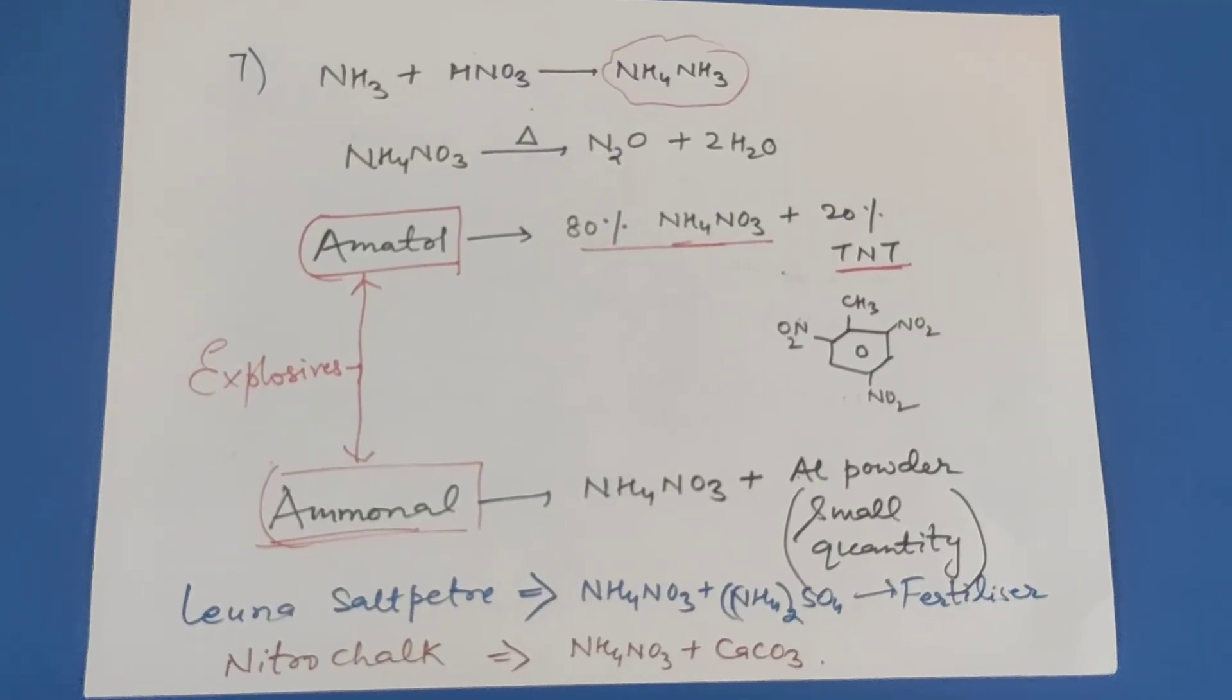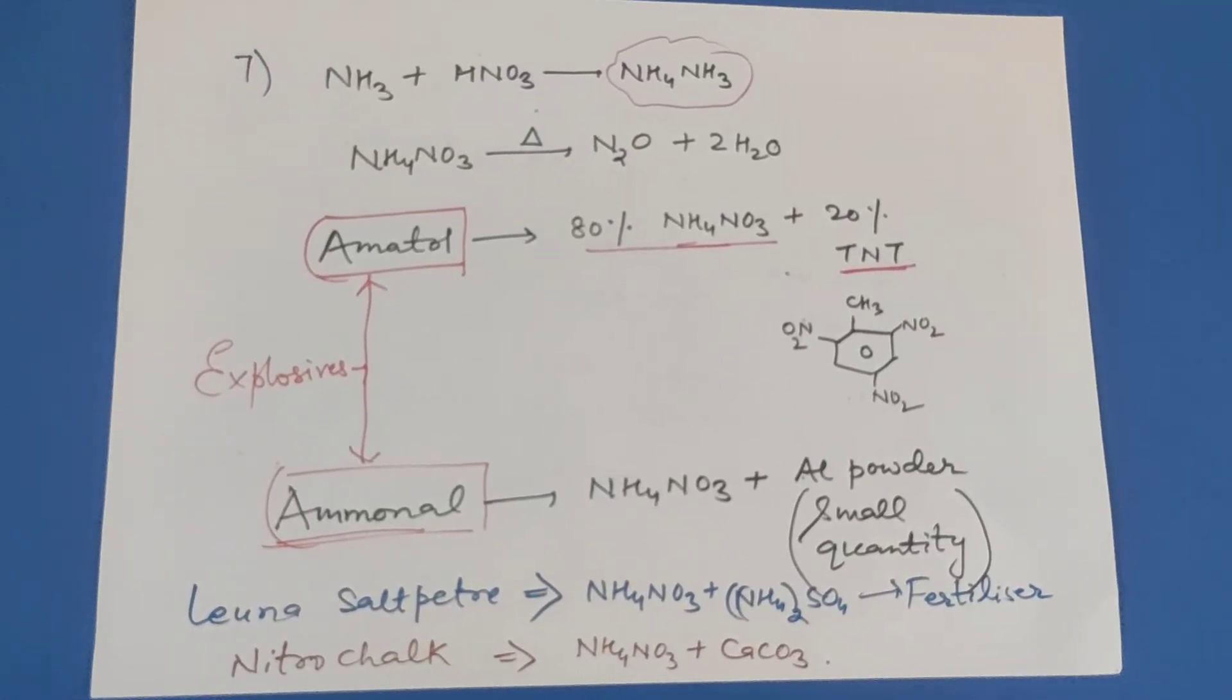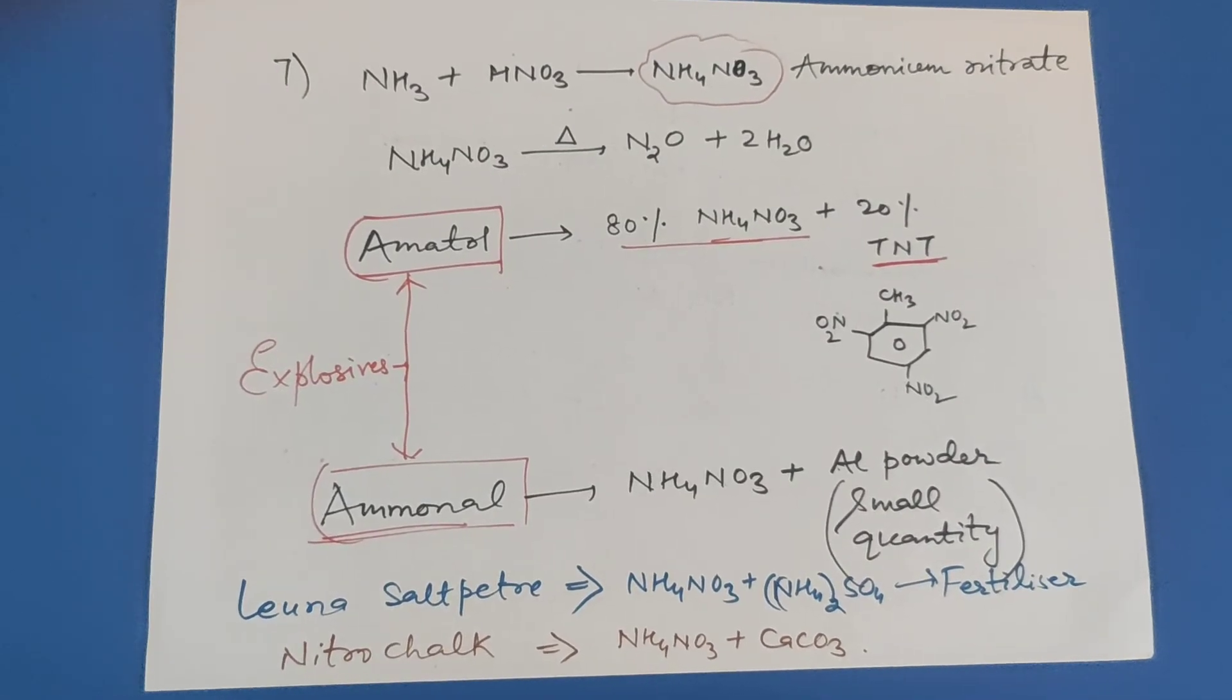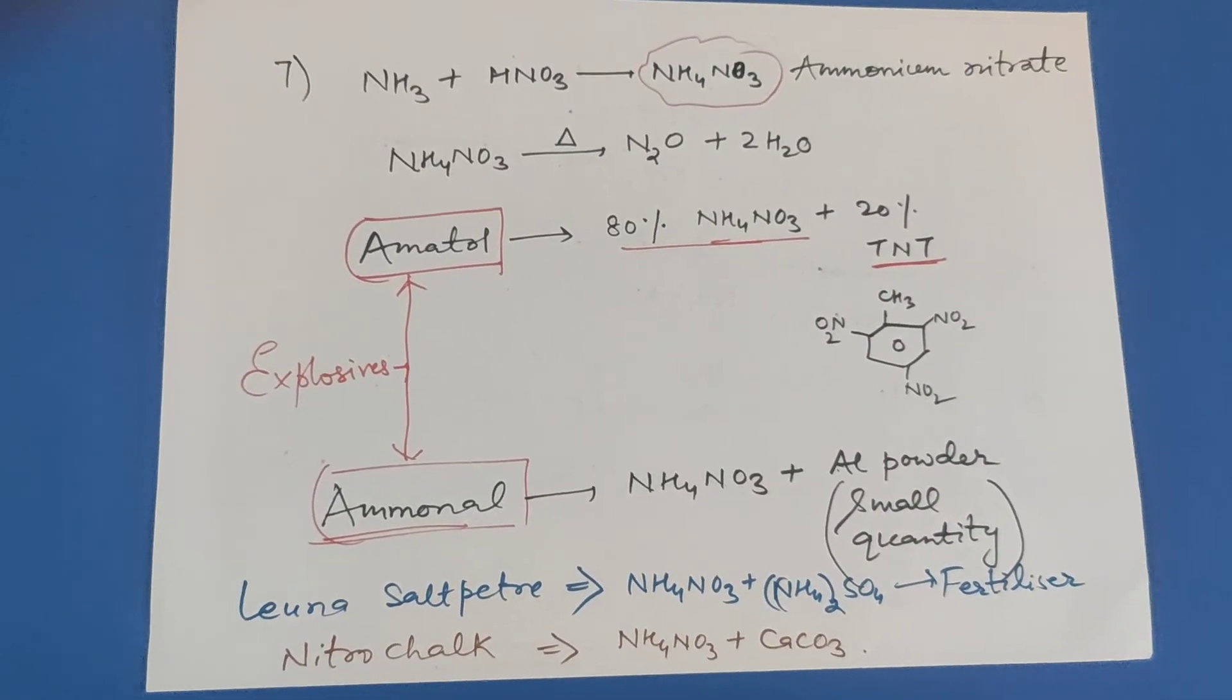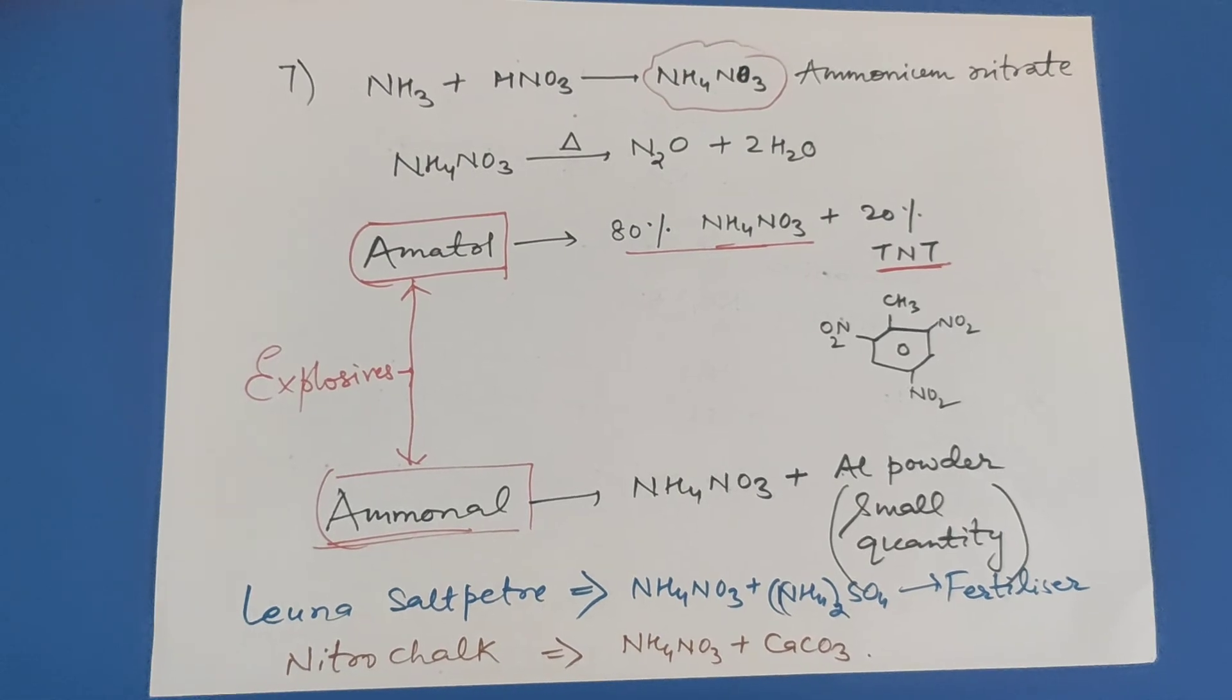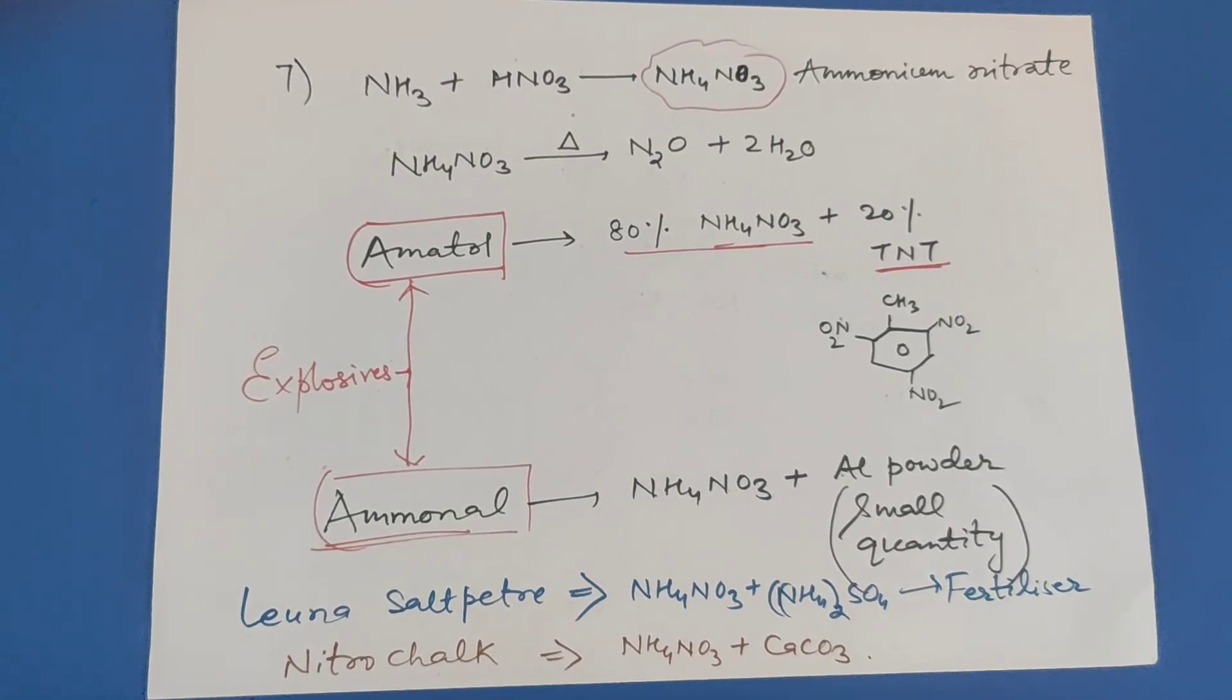Ammonia reacts with nitric acid to form ammonium nitrate. Ammonium nitrate when heated forms dinitrogen oxide plus water.